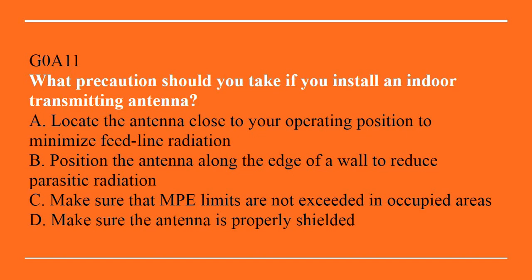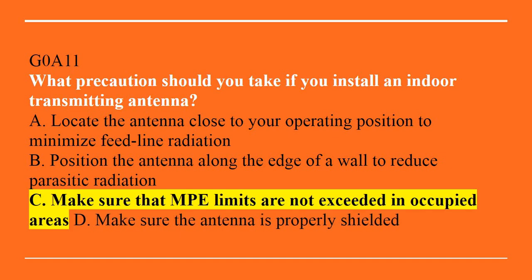G0A11: What precautions should you take if you install an indoor transmitting antenna? A, locate the antenna close to your operating position to minimize feed-line radiation. B, position the antenna along the edge of the wall to reduce parasitic radiation. C, make sure that MPE limits are not exceeded in occupied areas. Or D, make sure the antenna is properly shielded. Answer is C — make sure the MPE limits are not exceeded in occupied areas.